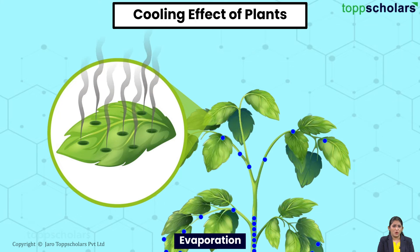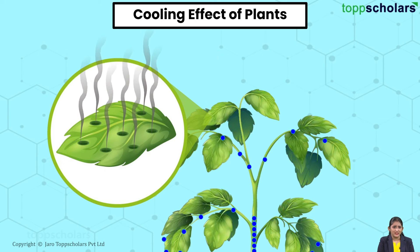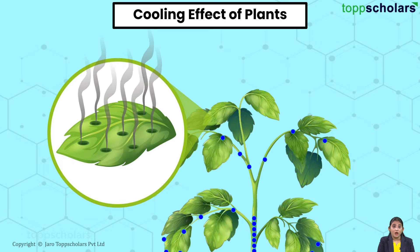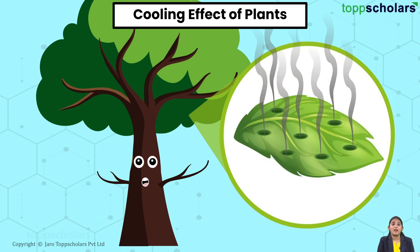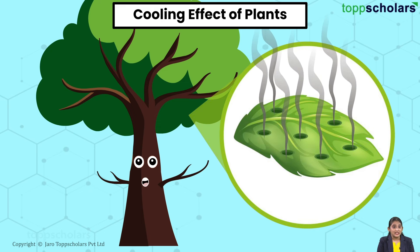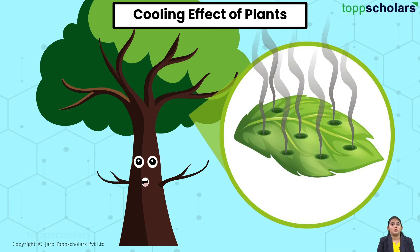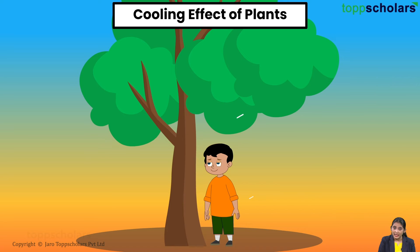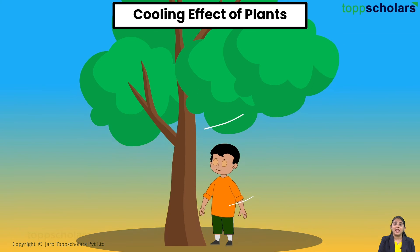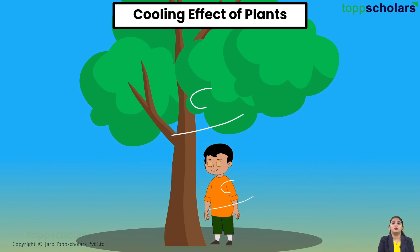So plants also sweat? Yes, you heard it right. When the temperature of a plant's body or their surrounding rises, water starts evaporating from the leaf surface. This process is known as transpiration. Due to the same, the surrounding air starts to cool down.